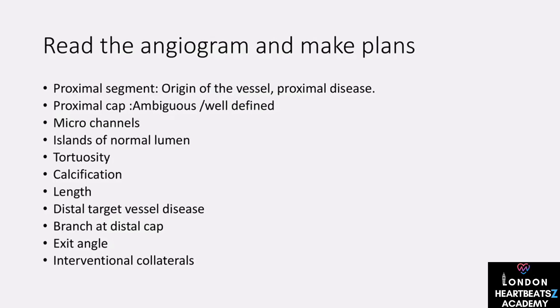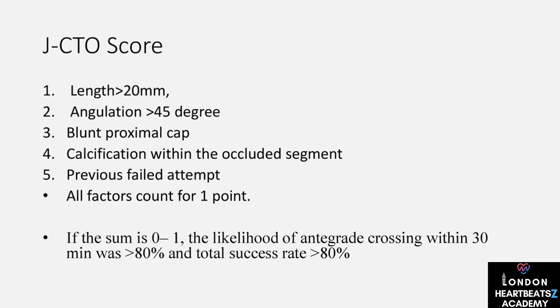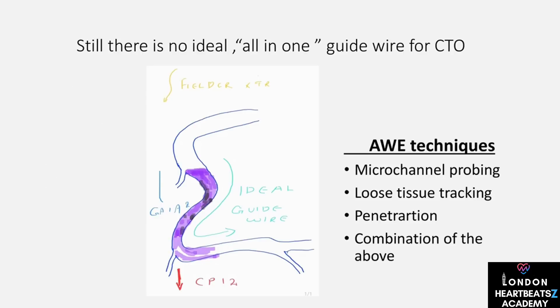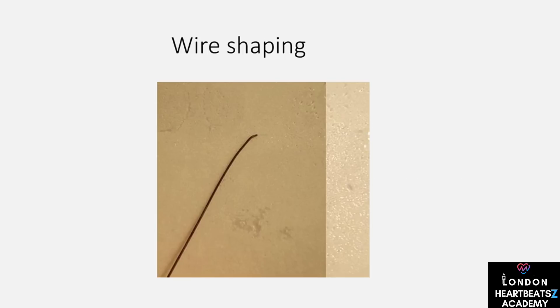To successfully navigate a CTO procedure, you need a clear roadmap. We begin with simultaneous angiography to visualize the occluded vessel. Next, we assess the complexity using the JCTO score, which helps us predict the difficulty of crossing the occlusion. We then engage with carefully selected guides that provide the necessary support. Shaping the guide wire is like crafting a key to fit a unique lock — it must be done with precision. We advance the microcatheter to the proximal stump, enter the proximal cap, and negotiate the wire through the body of the occlusion.